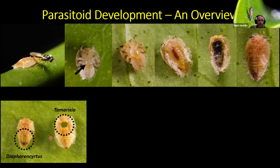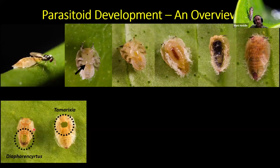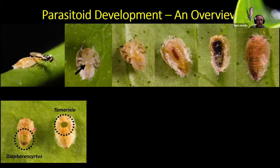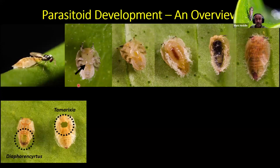We collected two parasitoid species: Diaphorencyrtus aligarhensis and Tamarixia radiata. You can distinguish the two species in the field based on their emergence holes — Diaphorencyrtus always exits in the posterior of the nymph, while Tamarixia radiata exits in the anterior region. Despite releasing more than 800,000 Diaphorencyrtus into California, this parasitoid did not establish — it hasn't established anywhere outside of its native range, including Florida. But Tamarixia radiata established readily in Southern California. This whole process is called parasitism: the female lays an egg, and as a result you get another parasitoid — a female if the egg is fertilized, or a male, which develops from an unfertilized egg.